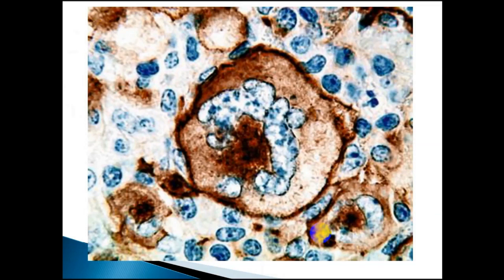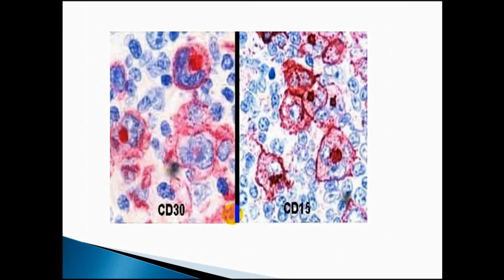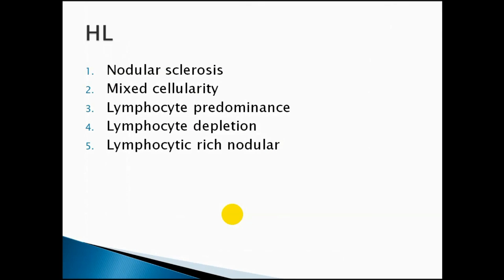This picture shows the staining of the RS cell: CD30 positive. This picture shows the CD30 or CD15 positive staining appearing pink.